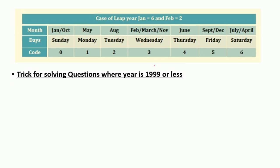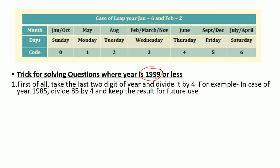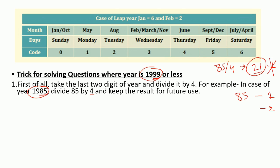For years 1999 or before, the process differs only in the first stage. Here you look at the last two digits only — no need to add 100. For example, for the year 1985, the last two digits are 85. That is your first value. The second value is 85 divided by 4 — you get 21 with some remainder, but you only take the whole number, which is 21. Exclude the remainder.